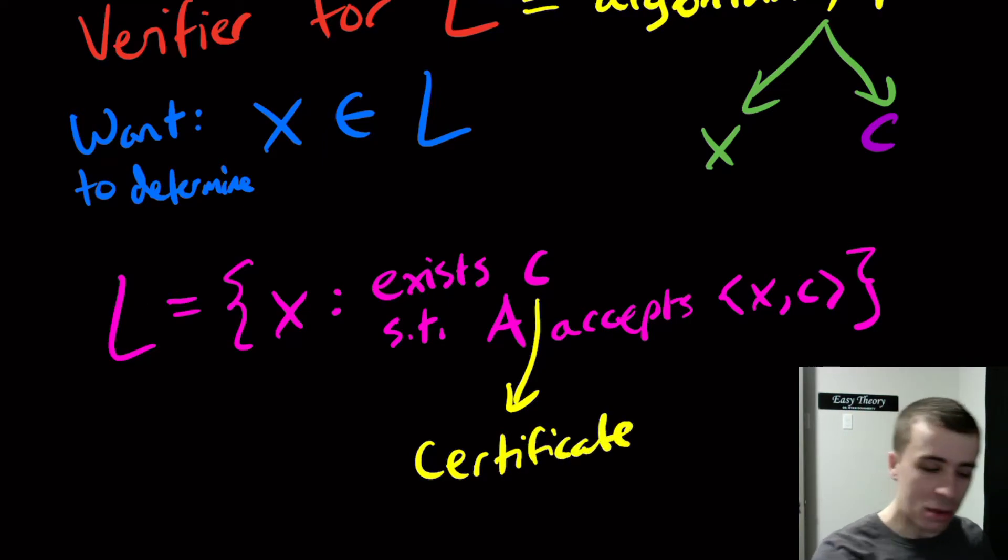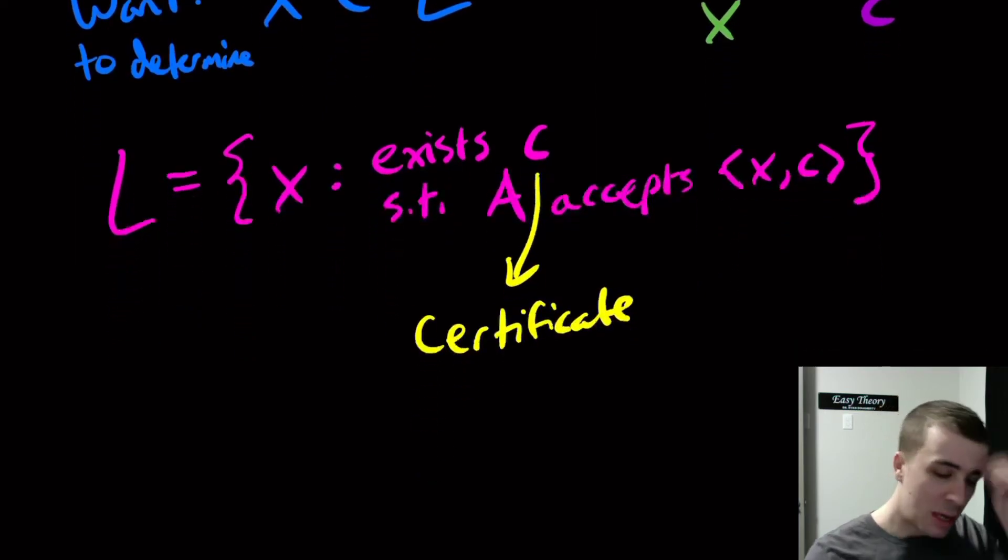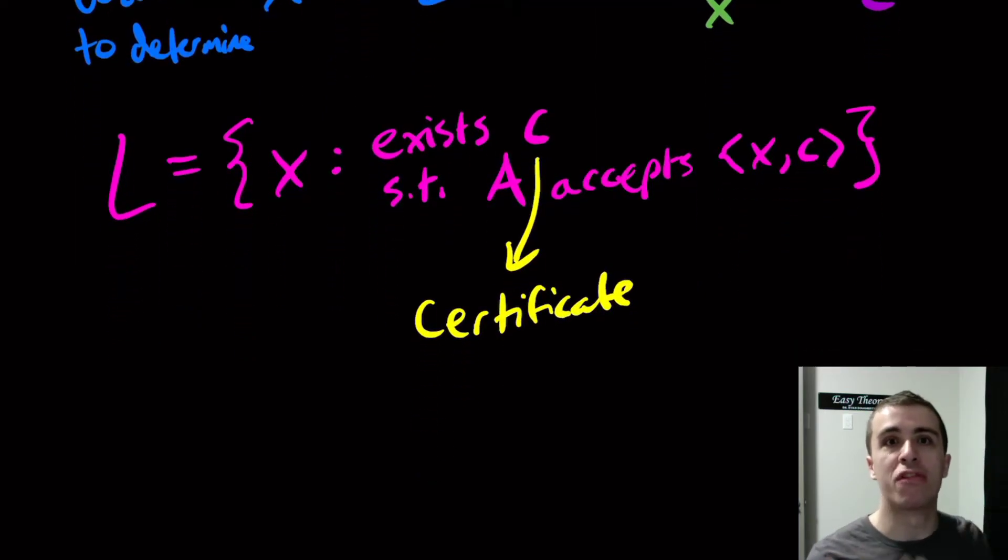The algorithm is given this additional info, this certificate, which provides extra information and then, along with the original input, figures out whether or not X belongs to L. In some sense, the C could actually make the problem easier to solve because maybe I don't have to search so much. I can use this additional bit of info and say, oh, you should search here not over here.